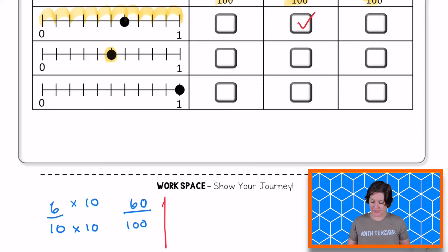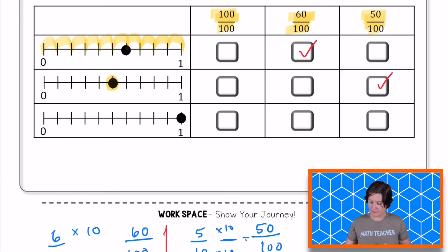The next fraction, the point right here is located at five tenths. So let me write out this fraction, five tenths, which is equal to how many hundredths? 50 hundredths, right? 50 hundredths is equal to five tenths. Why? Because when we multiply the denominator and the numerator by 10 tenths, or really what we're doing here is multiplying by a fraction that's equal to one, we get 50 hundredths. So let's go ahead and make sure that you have that one marked.